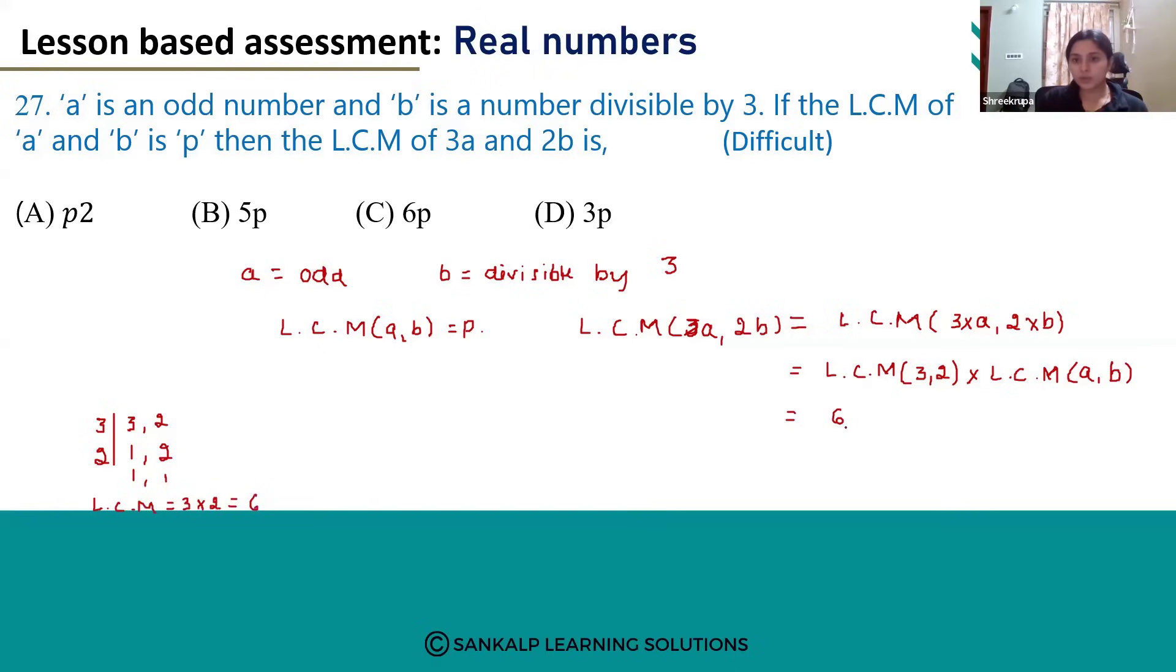So LCM of 3 and 2 is 6, and LCM of A and B they have already given it as P. So the LCM will become 6 times P. So the LCM of 3A and 2B is 6P. The correct answer is option C, 6P.